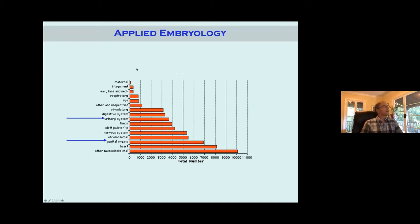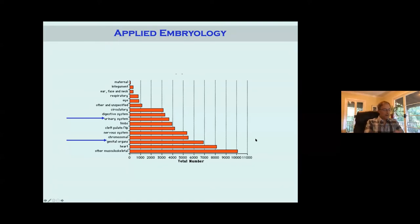If you like congenital anomalies and embryology, you're going to love pediatric urology, because the urinary system and the genital system together have more congenital anomalies associated with them than anything else — more than the next closest field by far, such as musculoskeletal or heart. So we're in a very embryologic field, and it's important to understand the embryology.